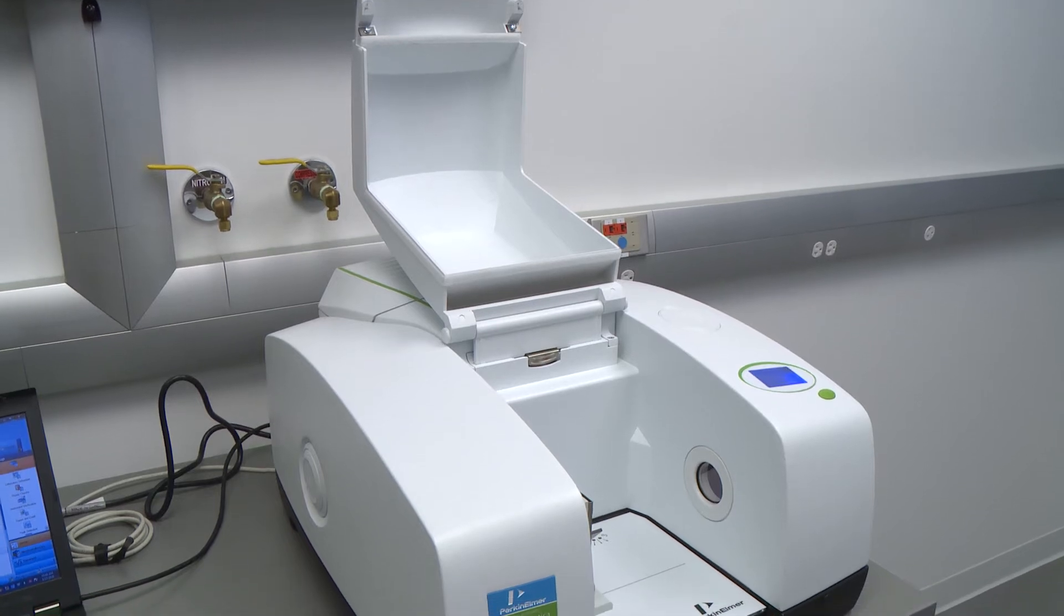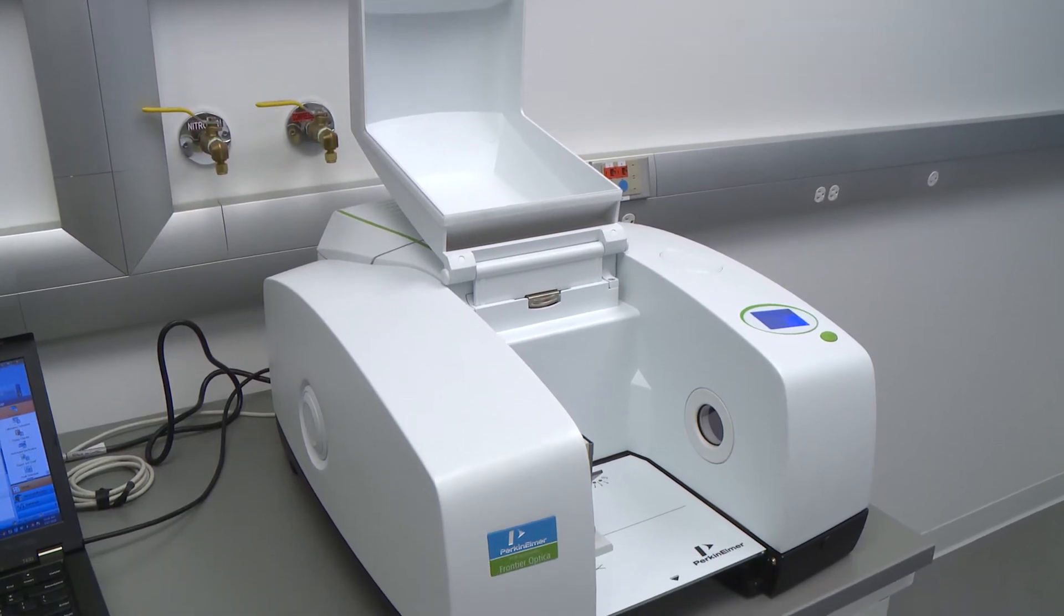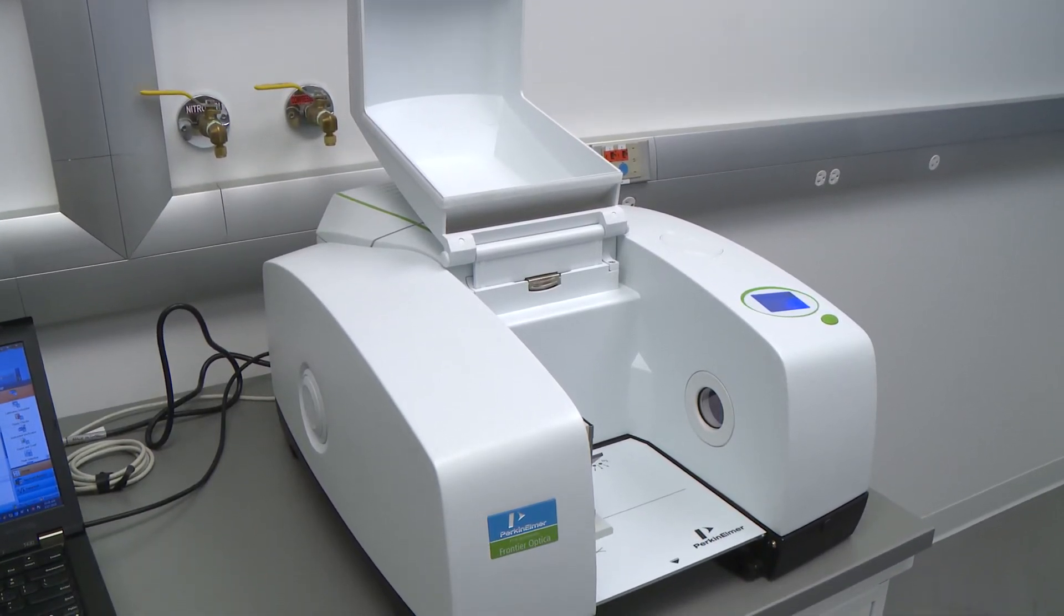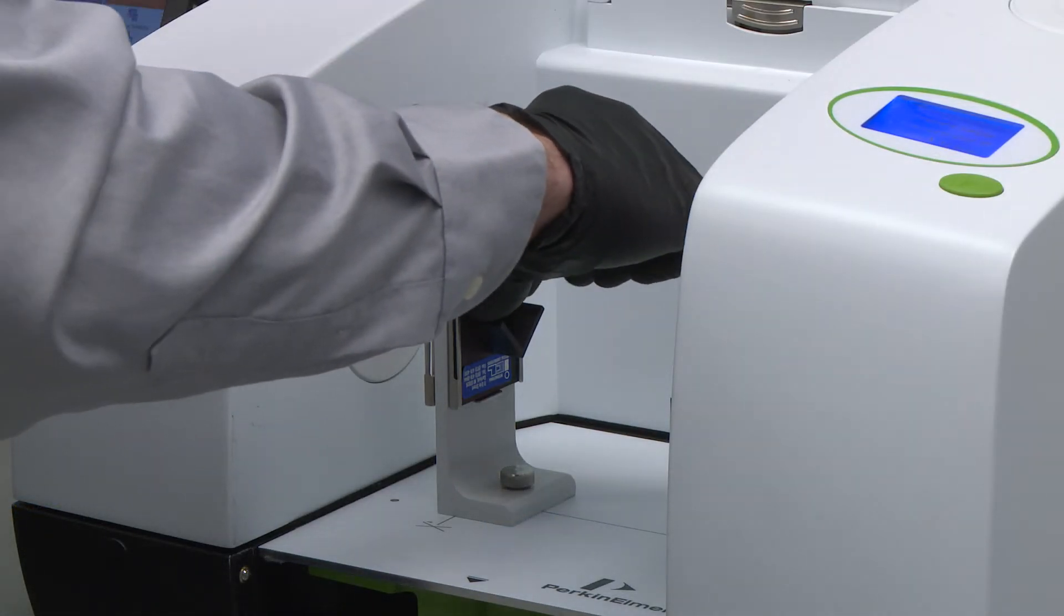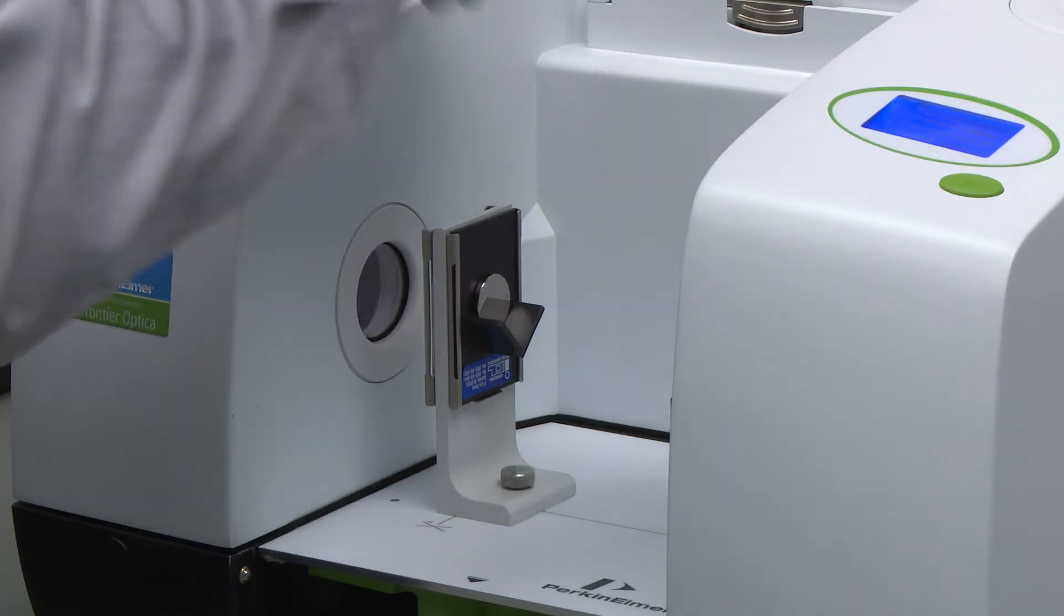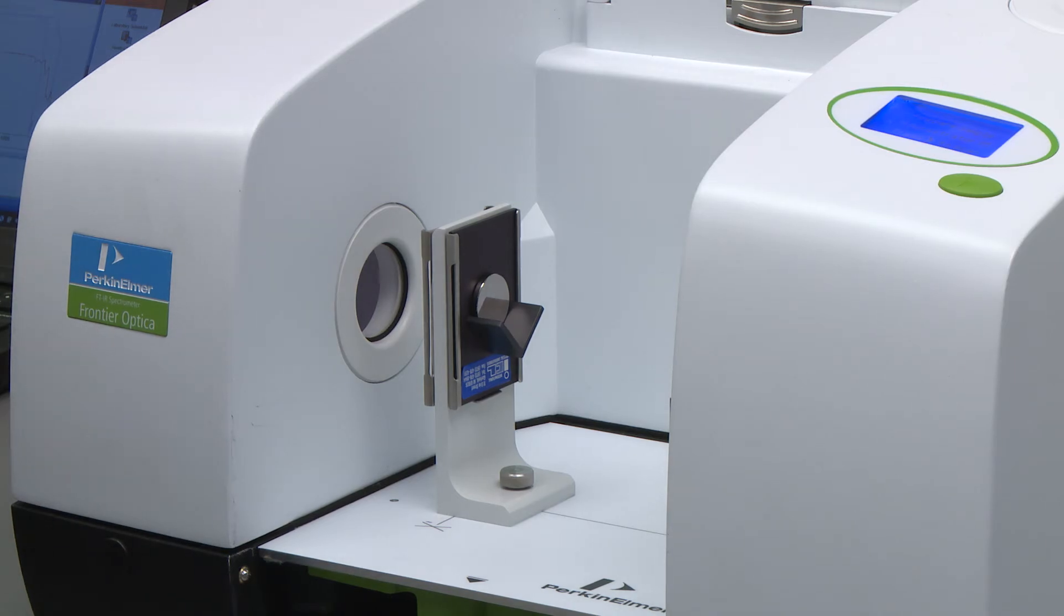During the background measurement, the sample compartment is left open without a sample in place. During sample measurement, the sample is placed in a holder. This allows the infrared light to pass through the sample for the sake of measurement.